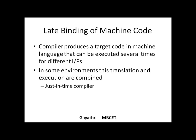Late binding of machine code: normally a computer produces target code or object code in a machine language, expected to execute several times for different inputs. In some environments, translation and execution are combined together, and the total output is called a just-in-time (JIT) compiler.